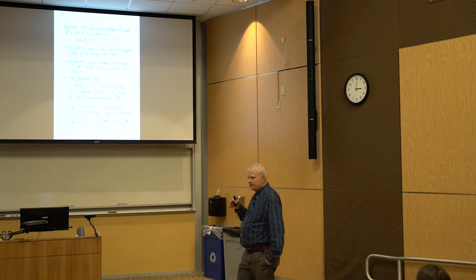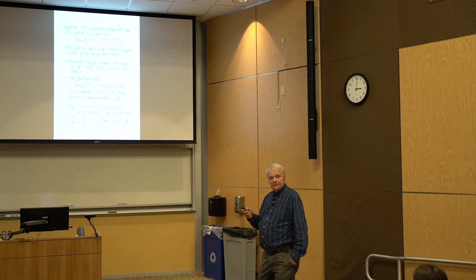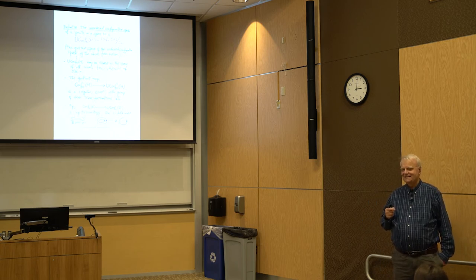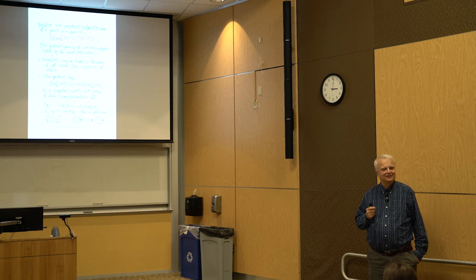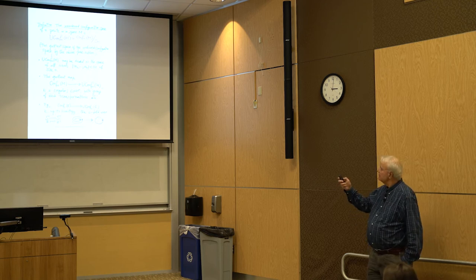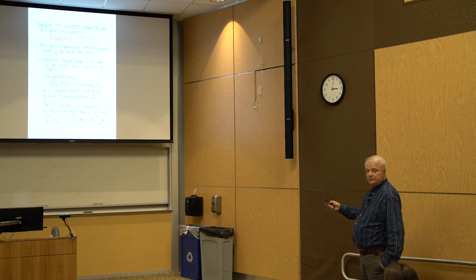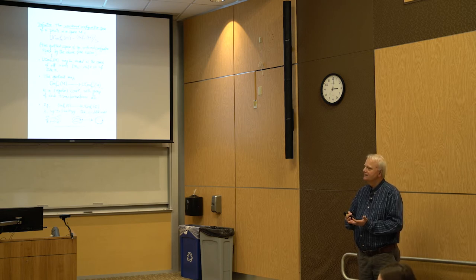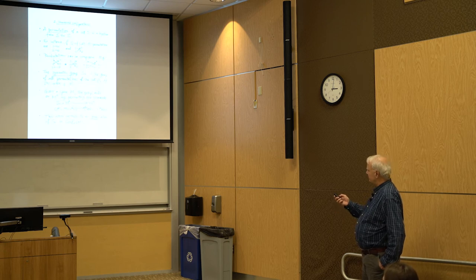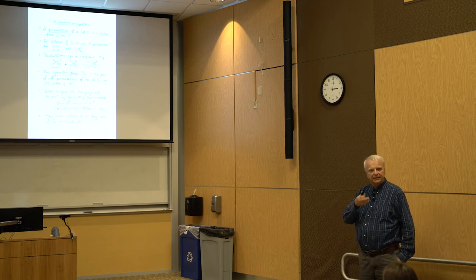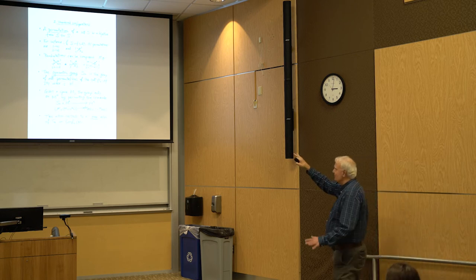In general the fiber of this cover — the preimage of a point — has size n factorial, since we're modding out by S_n which has n factorial elements. For example, a deck of 52 cards can be shuffled in 52 factorial ways — a number bigger than the number of atoms in the universe.